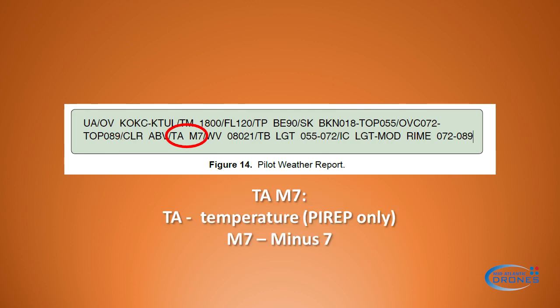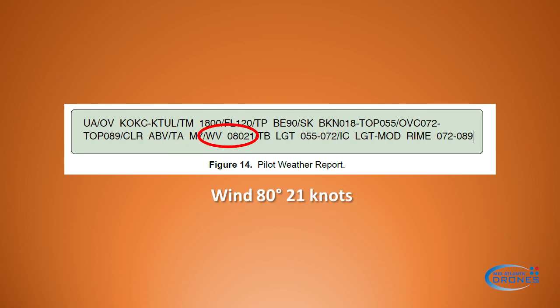Then we have 'TA M7' — TA stands for temperature, and this is for the PIREP only. The temperature M7 is minus 7 degrees. Then we have wind coming from 80 degrees at 81 knots.